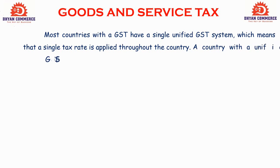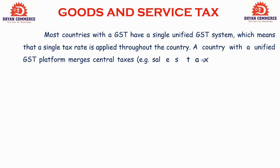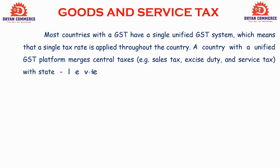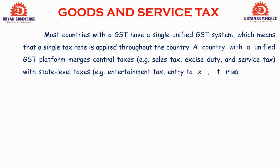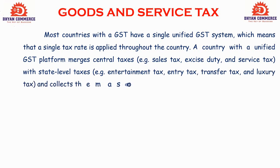A country with a unified GST platform merges central taxes — such as sales tax, excise duty, and service tax — with state level taxes such as entertainment tax, entry tax, transfer tax, and luxury tax — and collects them as one single tax. So both central government and state government indirect taxes were merged and are now collected under a single tax — the GST system.